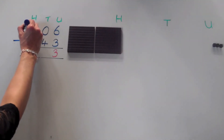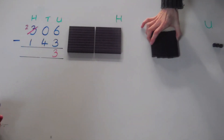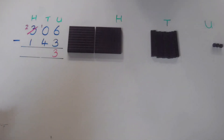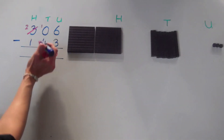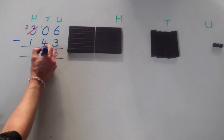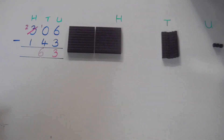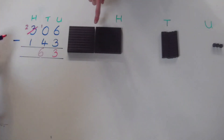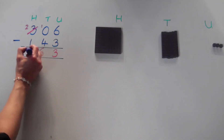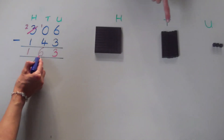We have lots of hundreds, so I will exchange a hundred from the hundreds column. Our three hundred becomes two hundred, and in the tens column I now have ten tens. So my tens column looks like ten. I can subtract four tens from ten tens — that leaves me with six tens. In the hundreds column, I now have two hundred take away one hundred, which is one hundred. Giving us an answer of one hundred and sixty-three.